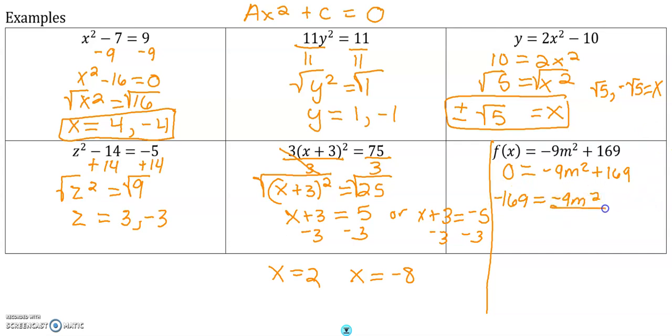And then I'm going to divide everything by negative 9. So we have negative 169 divided by 9.